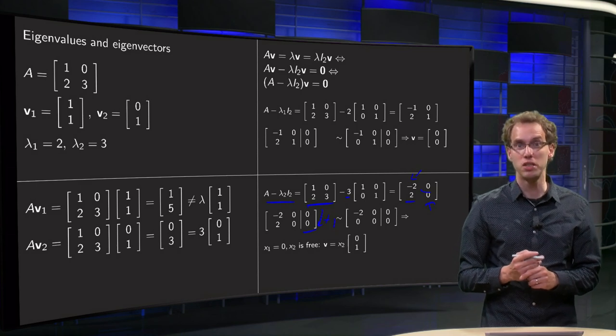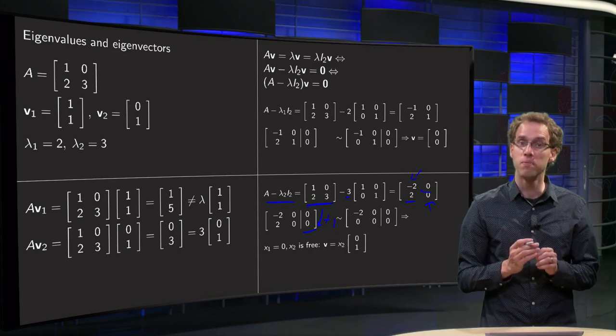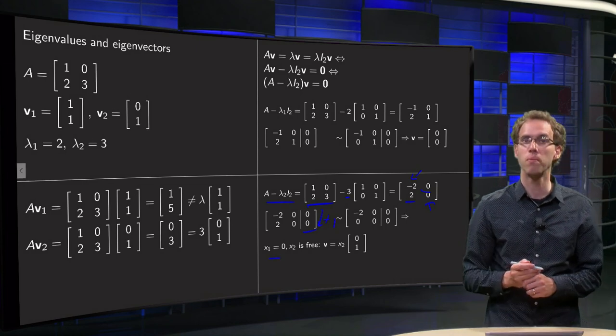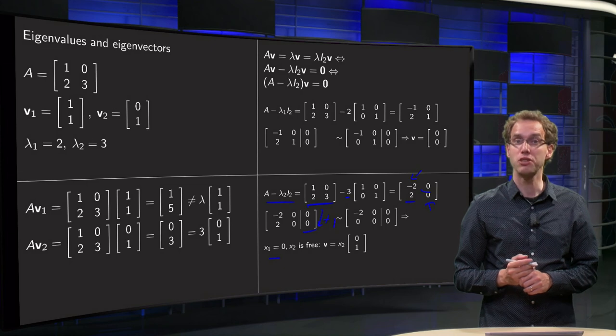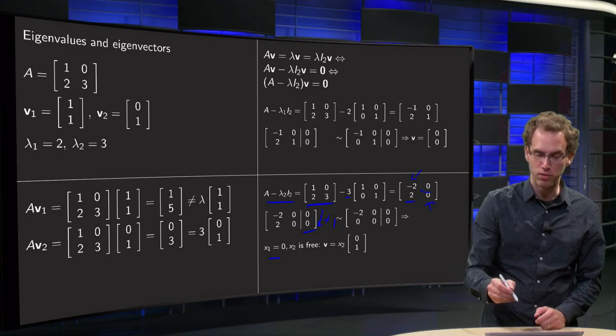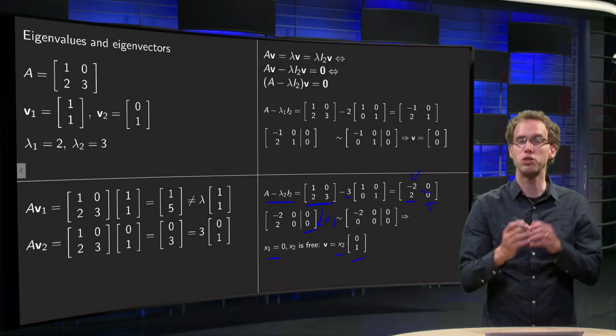And now we can solve the system. We see that -2 times x1 equals 0, so x1 has to be equal to 0. And x2 is free, not specified, which means that our general solution will be x2 times [0; 1], or [0; x2].